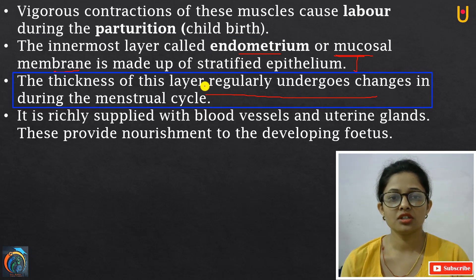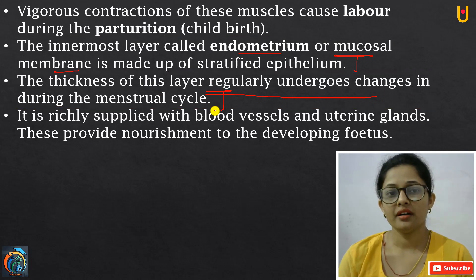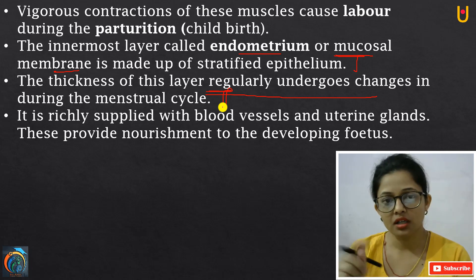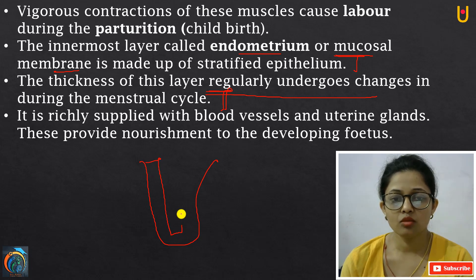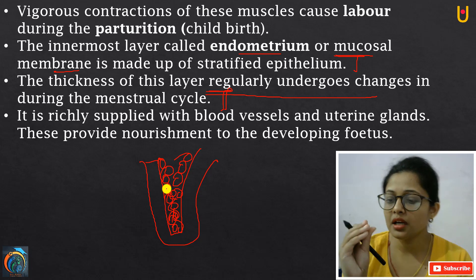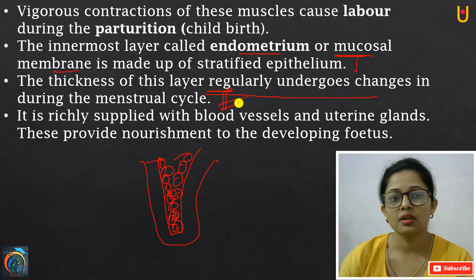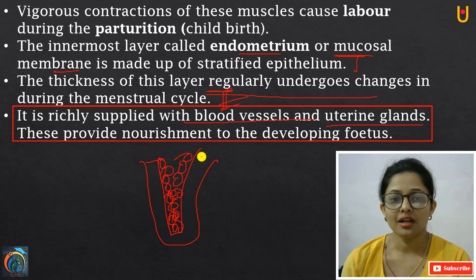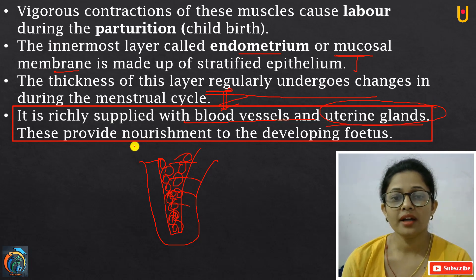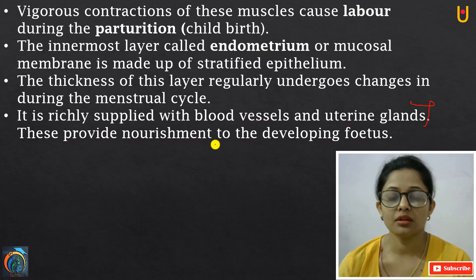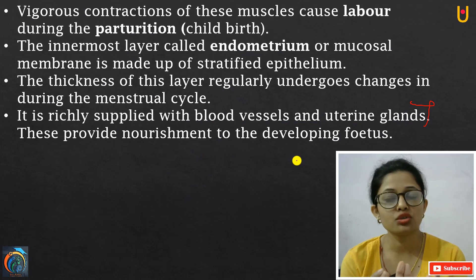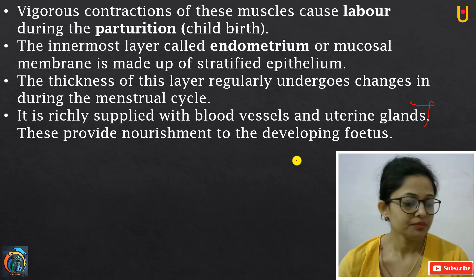The thickness of the endometrium regularly changes during the menstrual cycle. It builds up, then during menstruation the blood breaks down and the thickness decreases. The endometrium is richly supplied with blood vessels and uterine glands, and provides nourishment to the developing fetus.